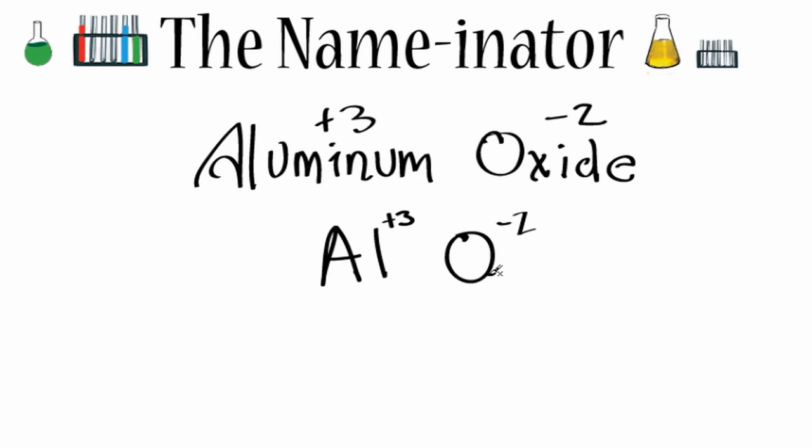Whenever I have a charge of 3, I'll usually double that. So let's put a 2 right here. When I double that, 2 times plus 3, that's going to give me a positive 6. Then over here I can put a 3, 3 times minus 2, that gives me a negative 6.